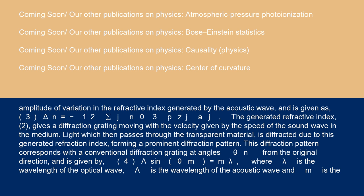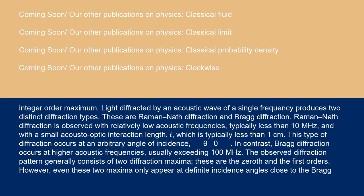Equation 2 gives a diffraction grating moving with the velocity given by the speed of the sound wave in the medium. Light which then passes through the transparent material is diffracted due to this generated refractive index, forming a prominent diffraction pattern. This diffraction pattern corresponds with a conventional diffraction grating at angles θN from the original direction and is given by Equation 4: λ sin(θM) = Mλ, where λ is the wavelength of the optical wave, λ is the wavelength of the acoustic wave, and M is the integer order maximum.